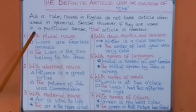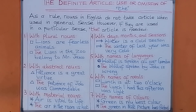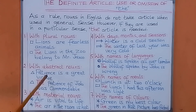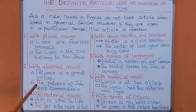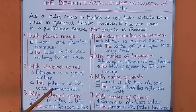Number two: with abstract nouns — like courage, bravery, wisdom. Abstract nouns are nouns that you cannot touch with your hands. If you are using abstract nouns in general sense, for example 'patience', you don't need the article. We say: 'Patience is a great virtue.' But if you are using the word 'patience' in a particular sense, then you add the article: 'The patience of Job was commendable.' We are using it in a particular sense, referring to that of Job.